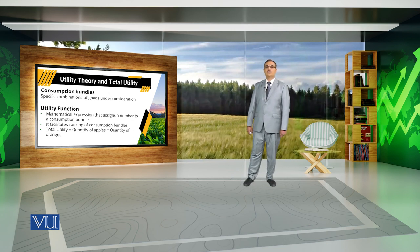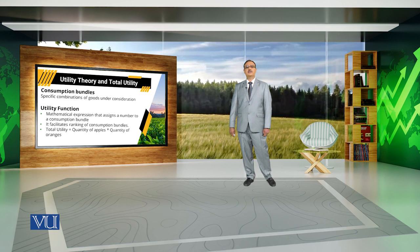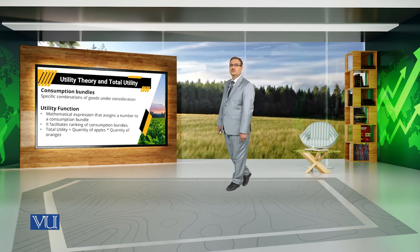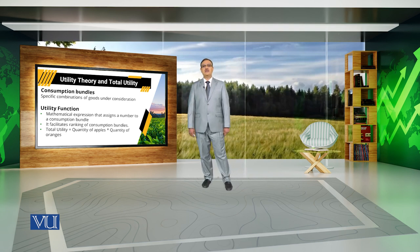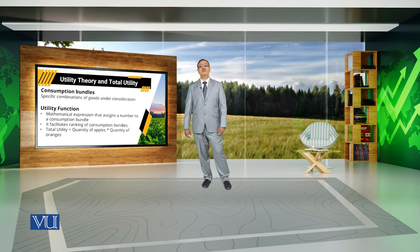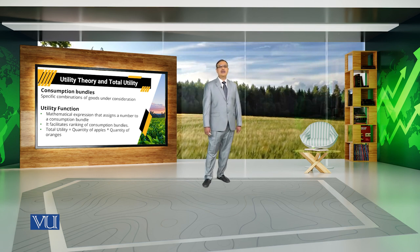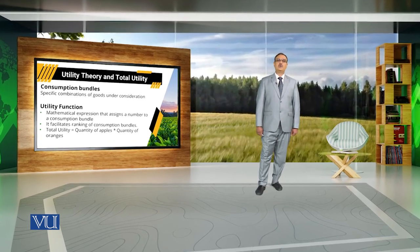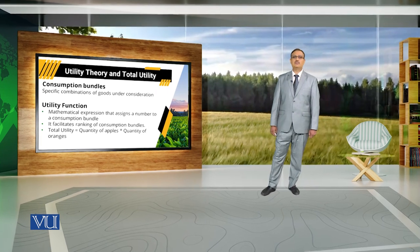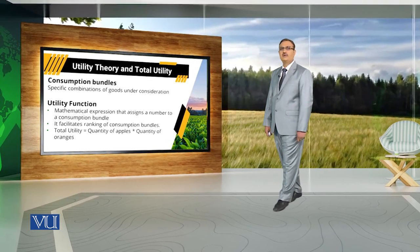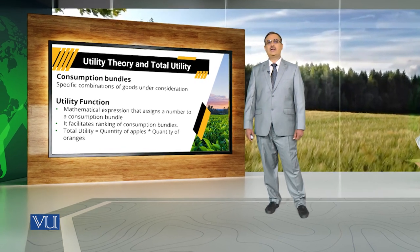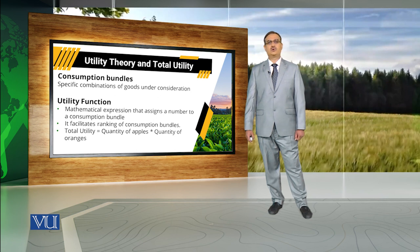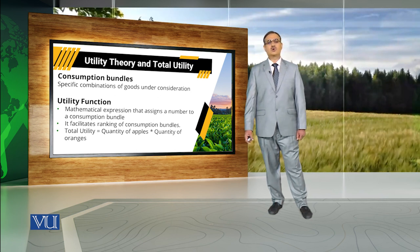Usually, to measure utility we use a utility function. A utility function is an algebraic expression that assigns numbers to consumption bundles and facilitates the ranking of those bundles. If we use the numerical values as they are, we are working under the cardinal utility framework. If we use those numbers to assign ranks to different levels of utility, we are using the utility function under the ordinal approach.